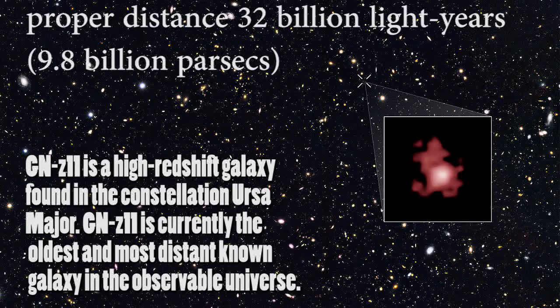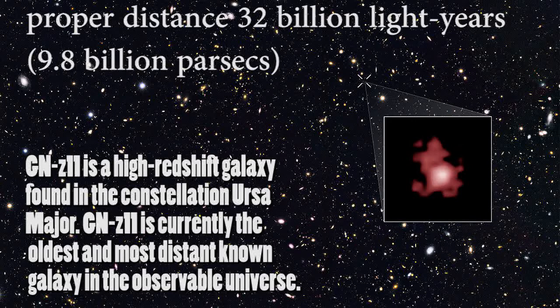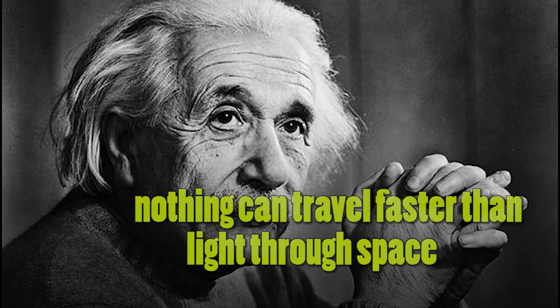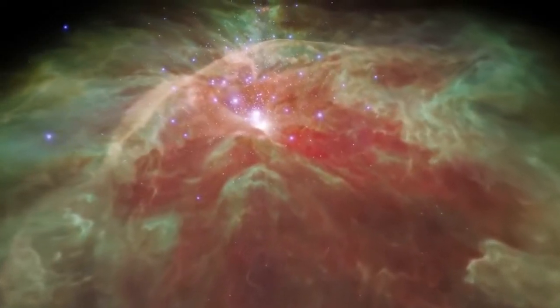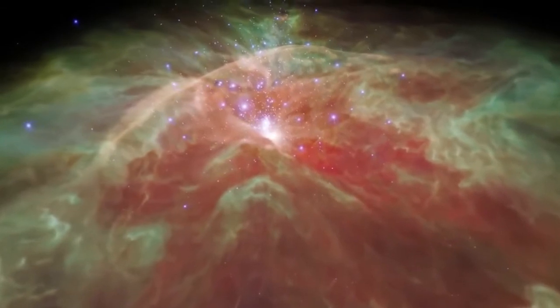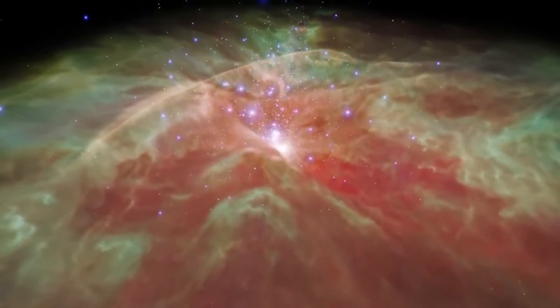But still, we can see those galaxies. Why is that so? And how can something move faster than the speed of light and not violate the theory of general relativity, which says nothing can move faster than the speed of light in space? To answer the first question: even though they are moving faster than the speed of light away from us today,